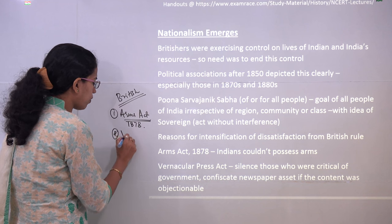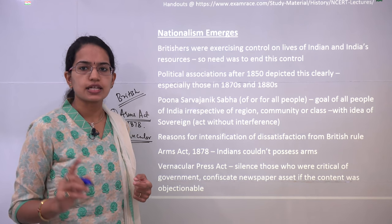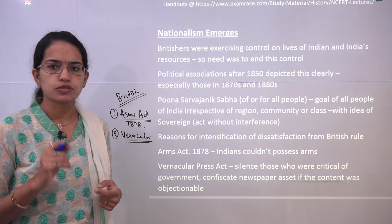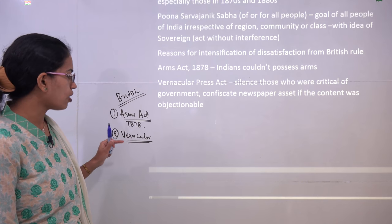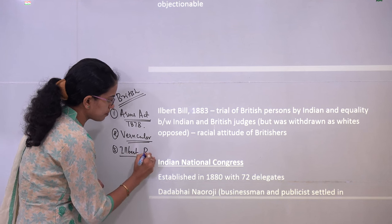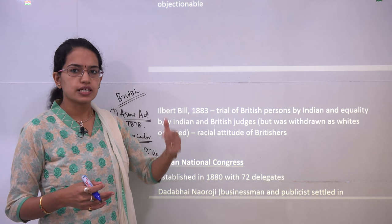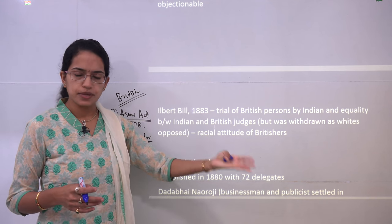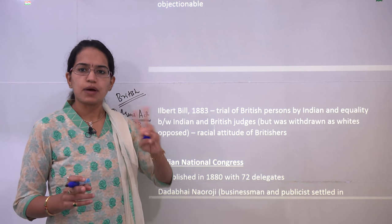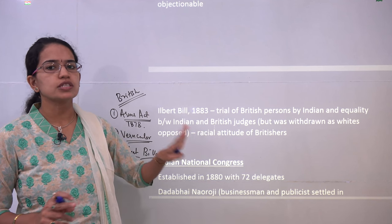The next important move was the Vernacular Press Act, which said that any objectionable content against the British government would not be allowed. If found, it would be confiscated along with the press. Along with these two, the third most important was the Ilbert Bill. The Ilbert Bill said that there should be equal rights given to Indian judges as well as British judges, and Indian judges should be able to bring any British subject to court. However, Britishers opposed it and the Ilbert Bill was repealed.